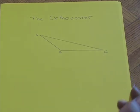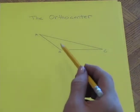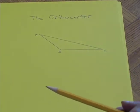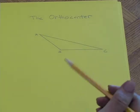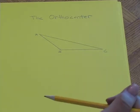We're going to construct the orthocenter of triangle ABC. The orthocenter is the point of concurrency of the three altitudes.